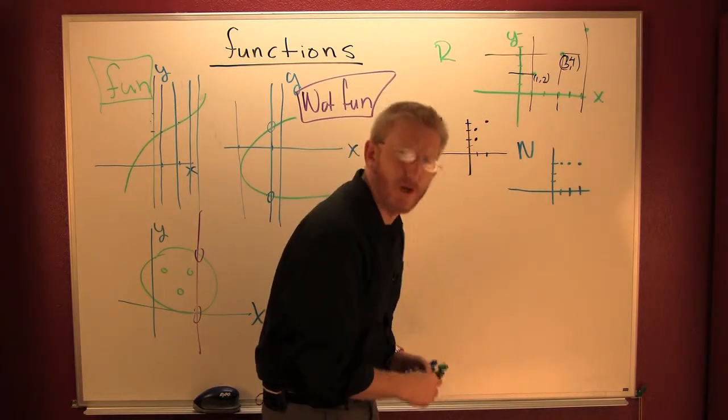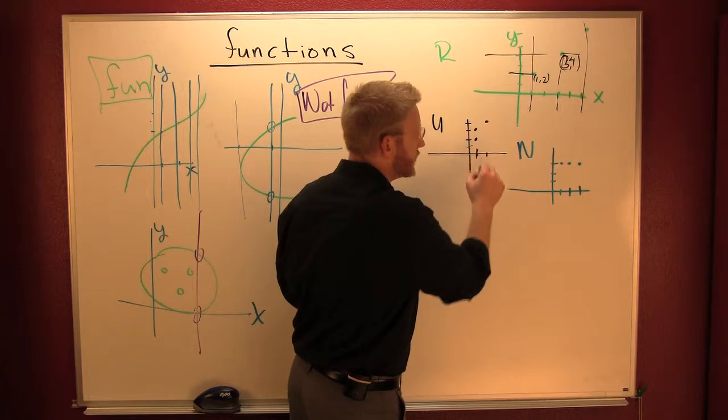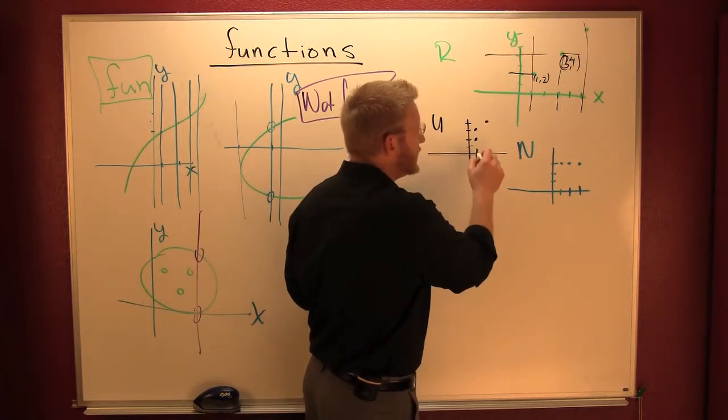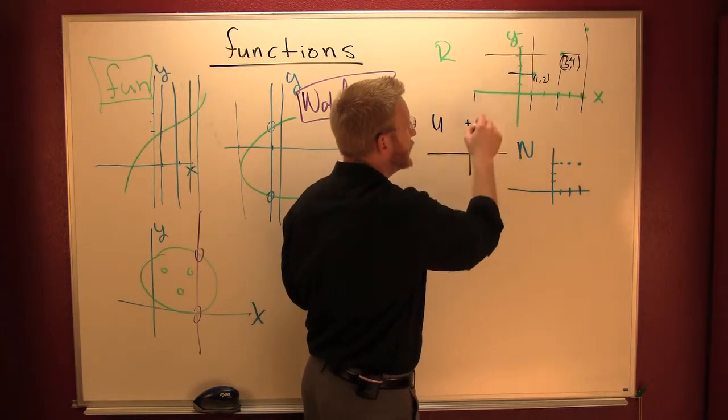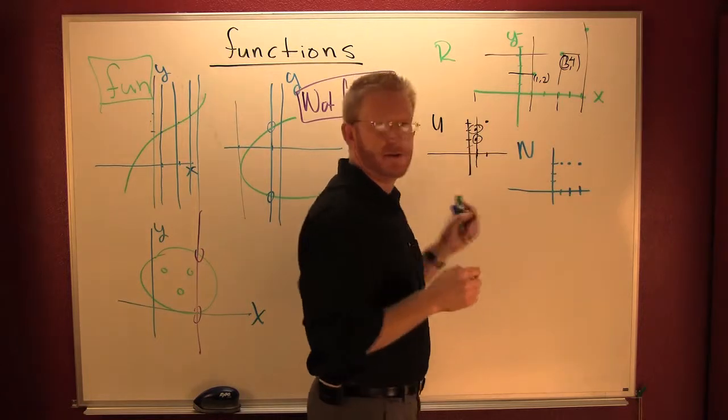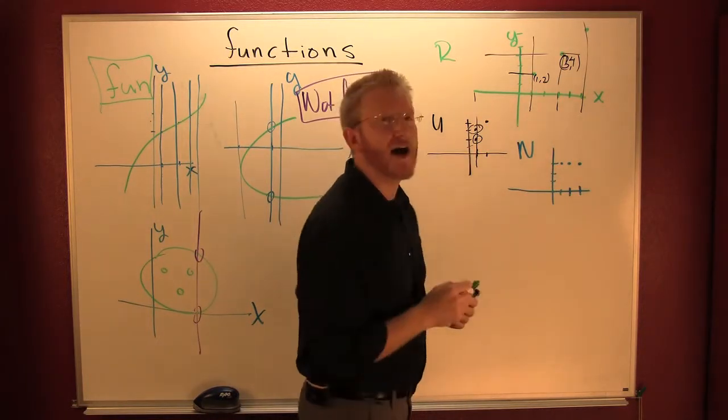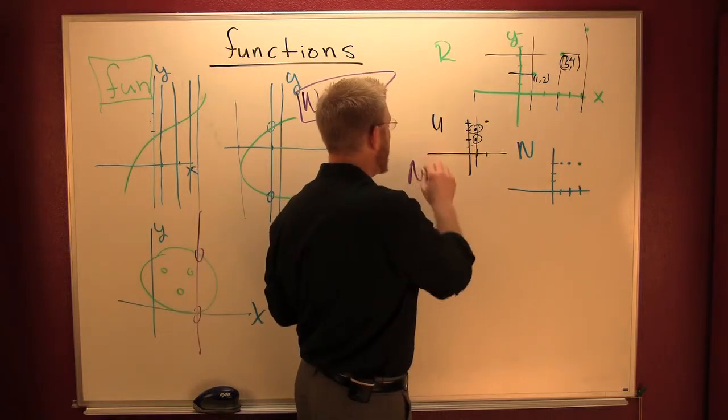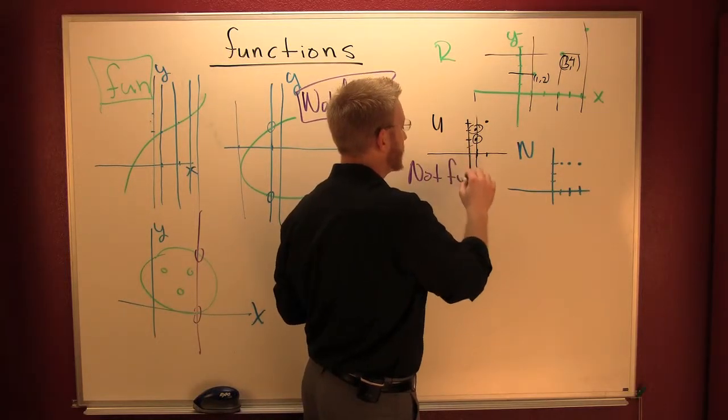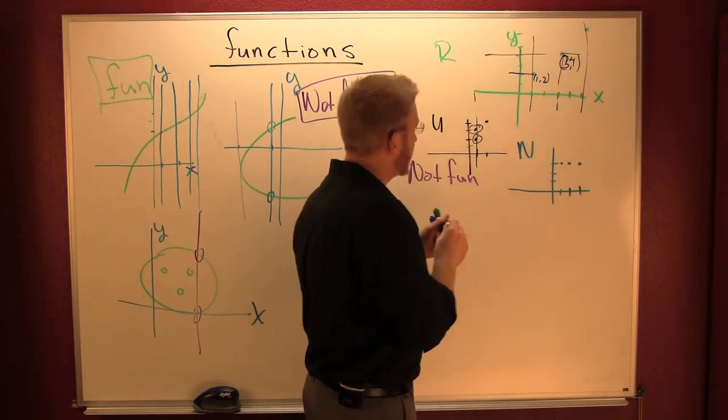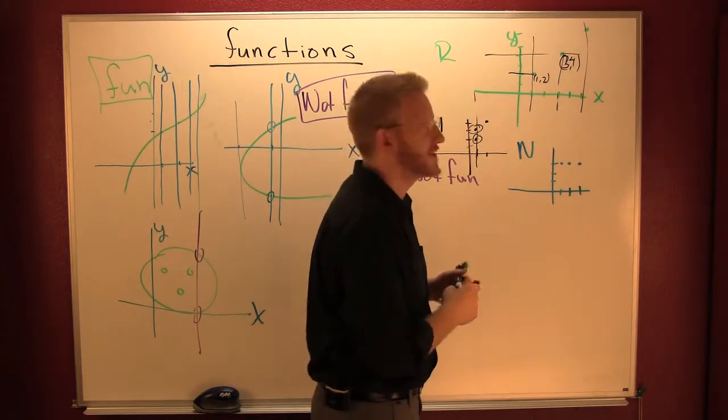Then take a look at what happened here in U. My X being one had two range elements. That one was not fun, right? This was not a function. That's where it was getting all over town.